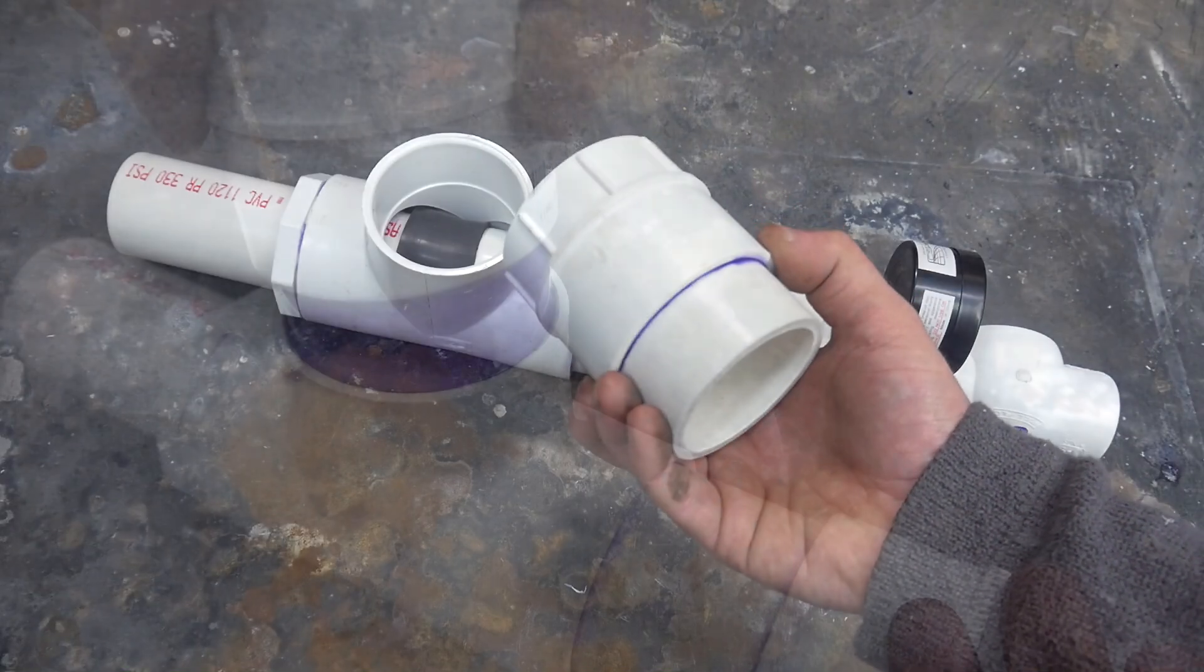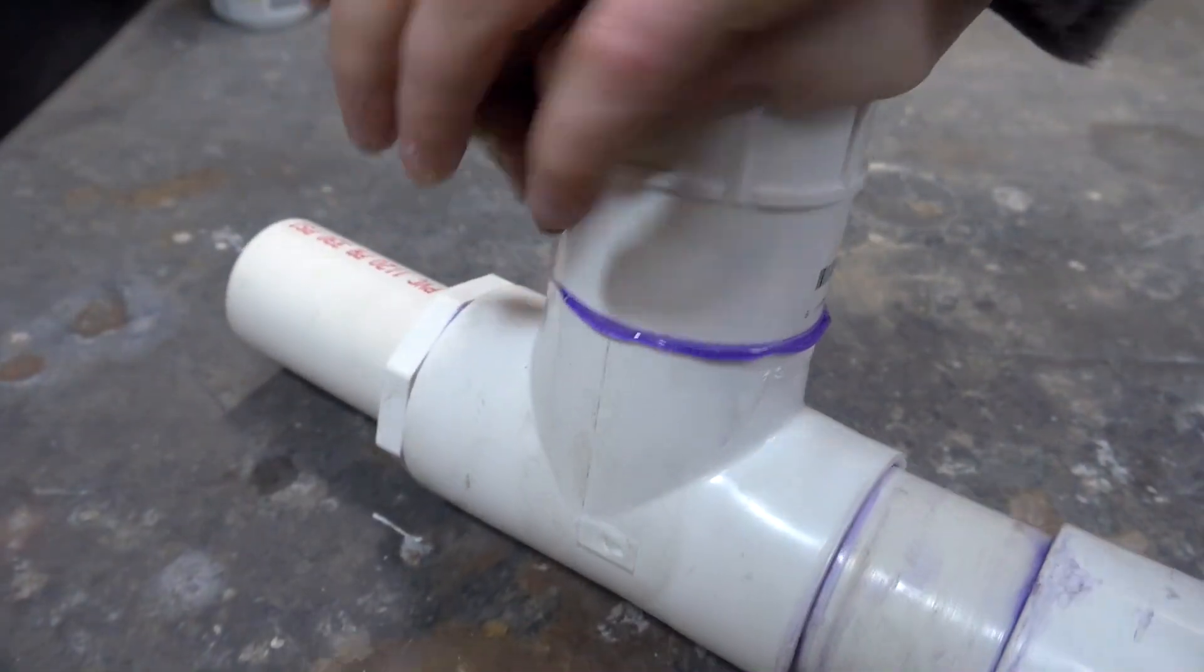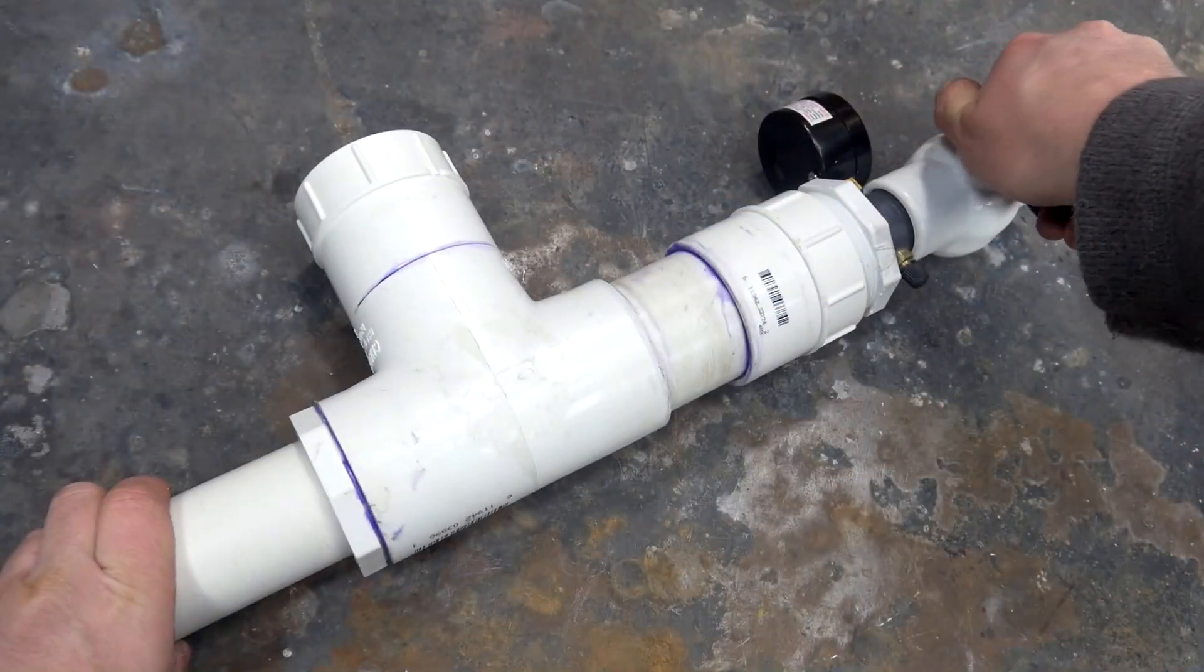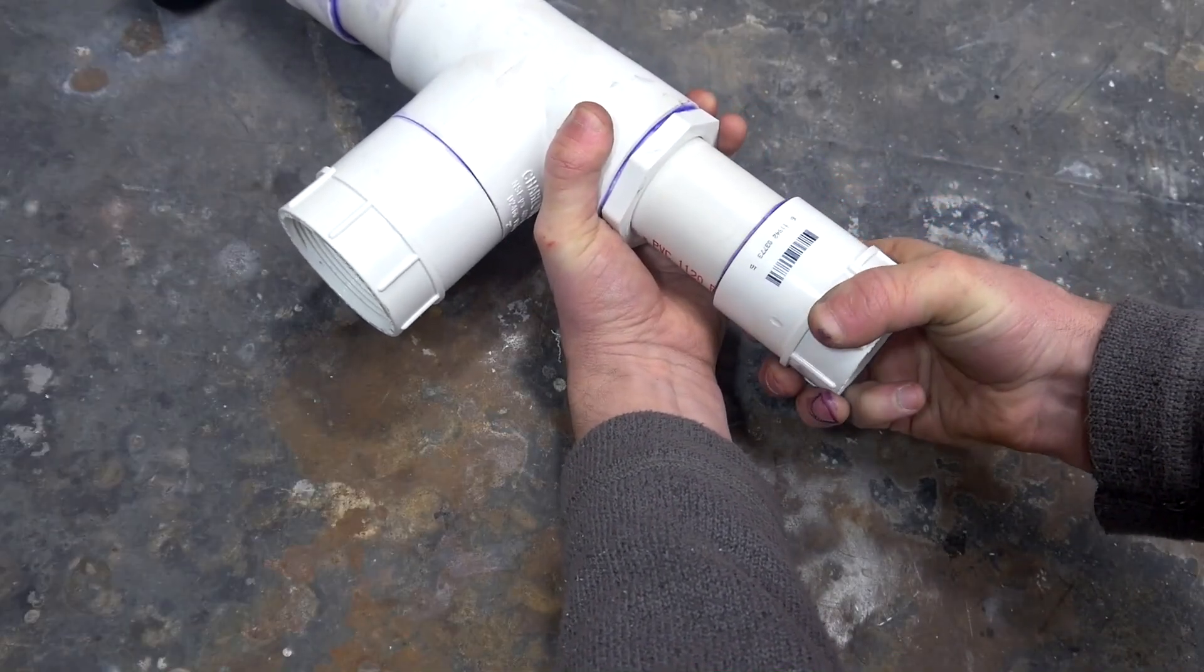All that's left is to attach a threaded coupling to the third opening of the T so that in a moment I'll be able to thread on a pressure chamber, and a second threaded coupling is glued to the end of the valve's output so I can attach a longer barrel.